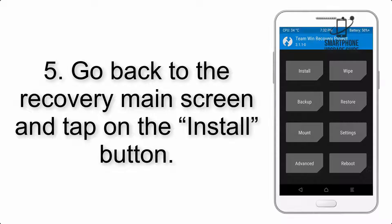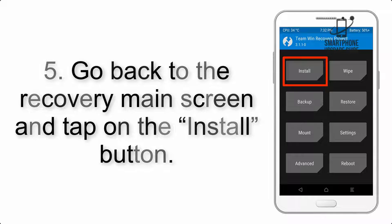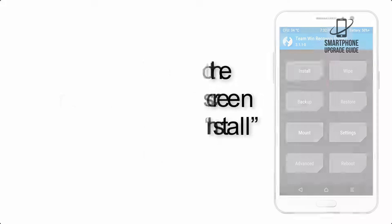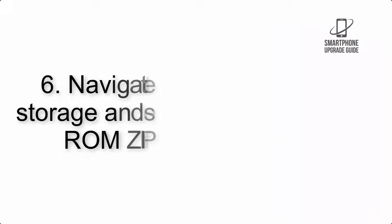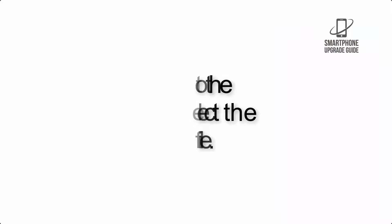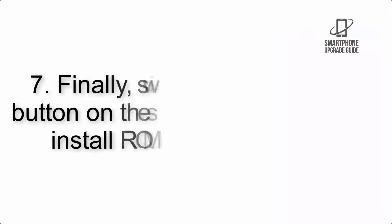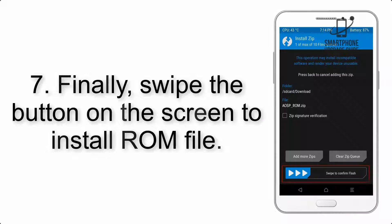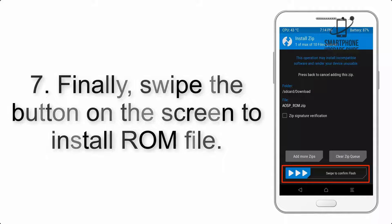Step 4: Swipe the button to wipe the device. Step 5: Go back to the recovery main screen and tap on the Install button. Step 6: Navigate to the storage and select the ROM zip file.